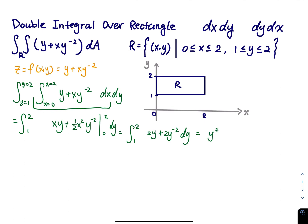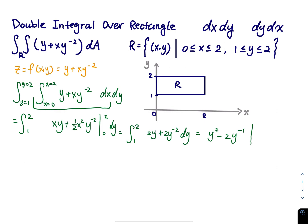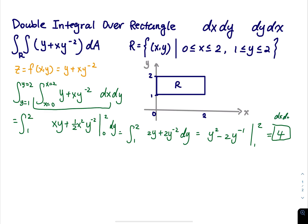The integral of 2y is y squared. For 2y to the negative 2, we get 2 times y to the negative 1 divided by negative 1, which equals negative 2y to the negative 1. Evaluating from y equals 1 to y equals 2 gives the answer equal to 4. This is the result from the dx dy integral.